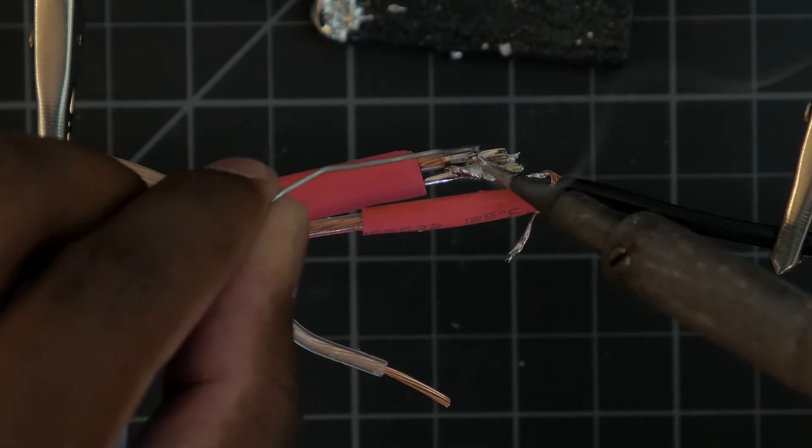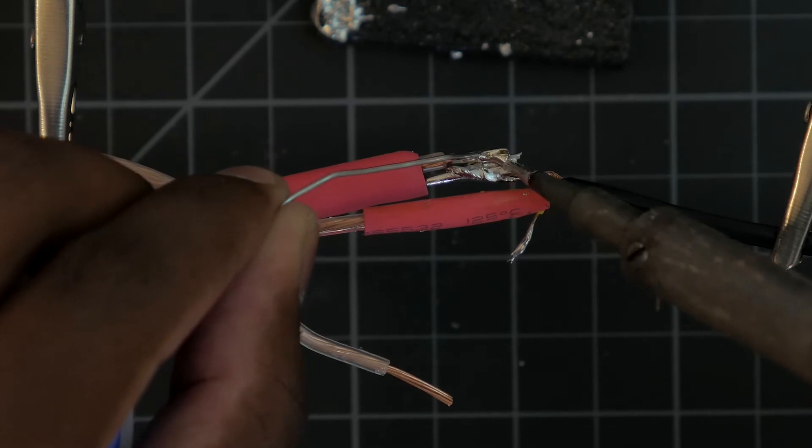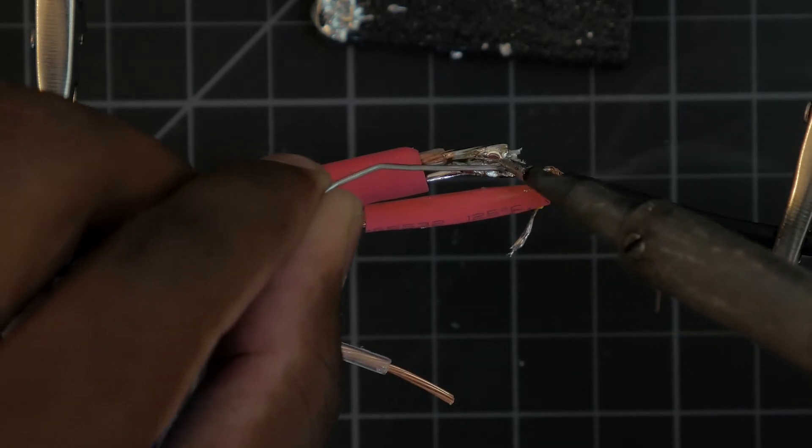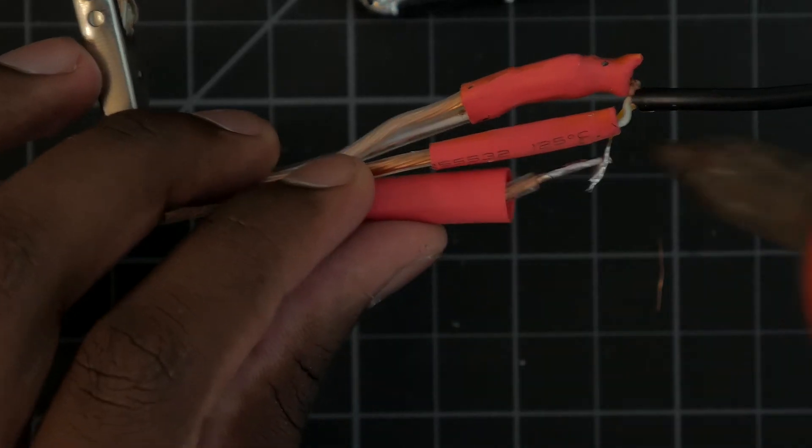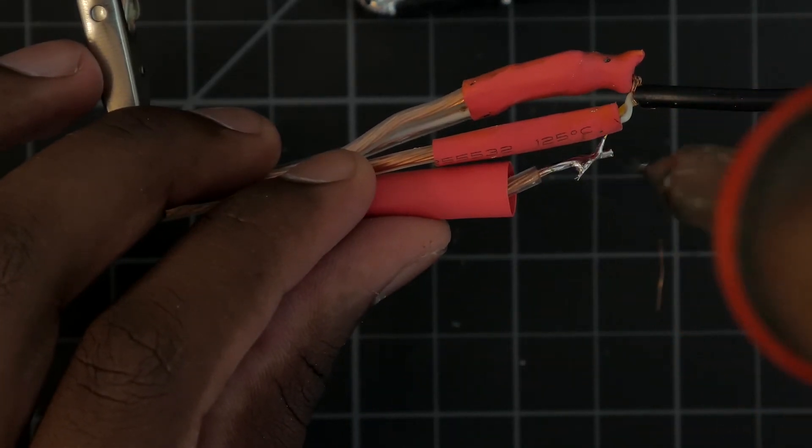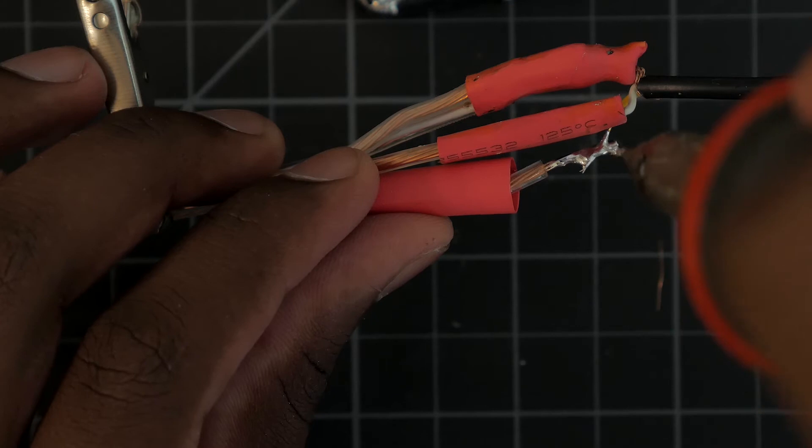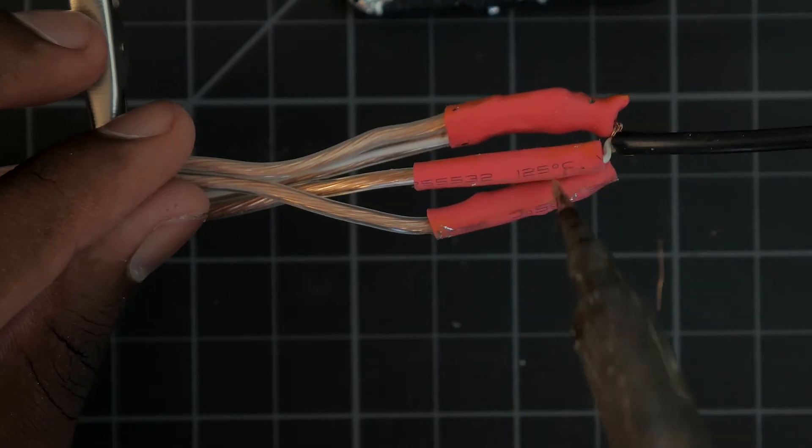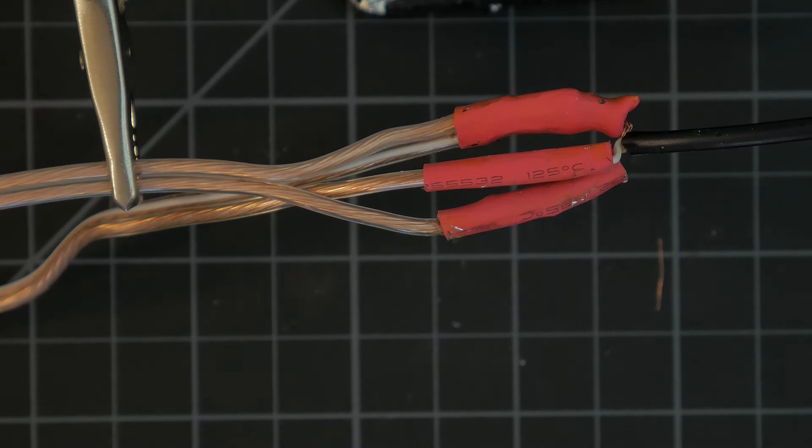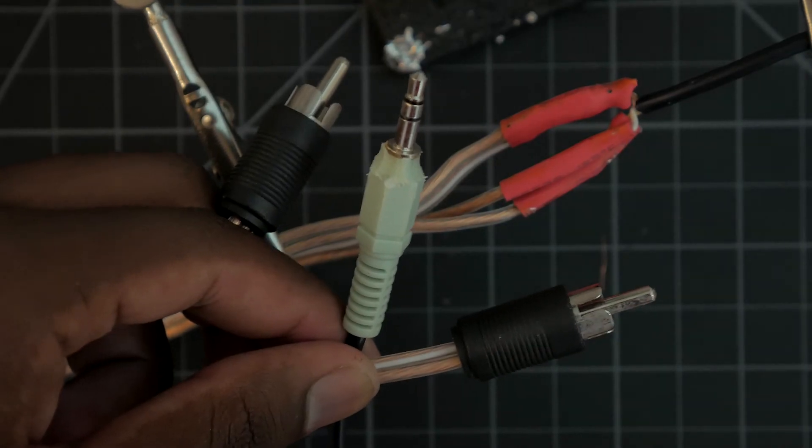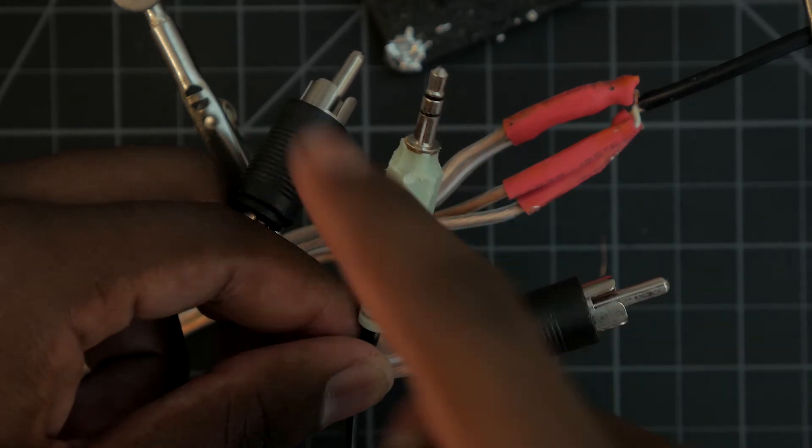Now get your second RCA cable. Solder the ground to common ground of the aux that is already soldered to one RCA cable. We'll then solder the positive to the only wire left and do the whole heat shrink tubing business. That means you should have three groupings: one of three wires which is ground, one of two wires which is the left channel, and the last one of also two wires which is the right channel. If you did everything right, you should have created an aux to stereo RCA cable converter.